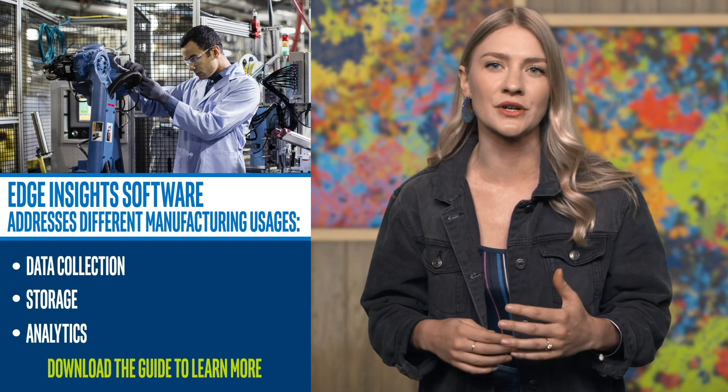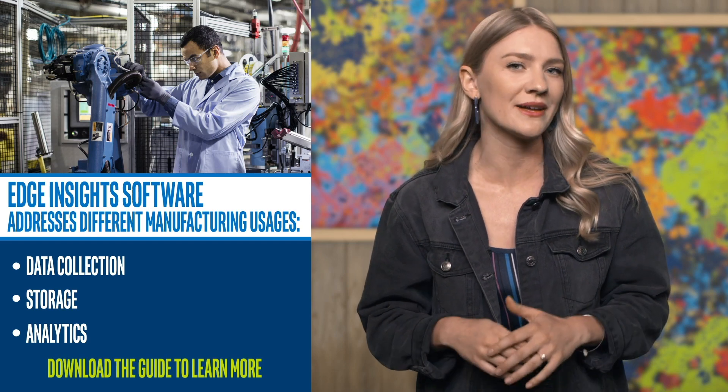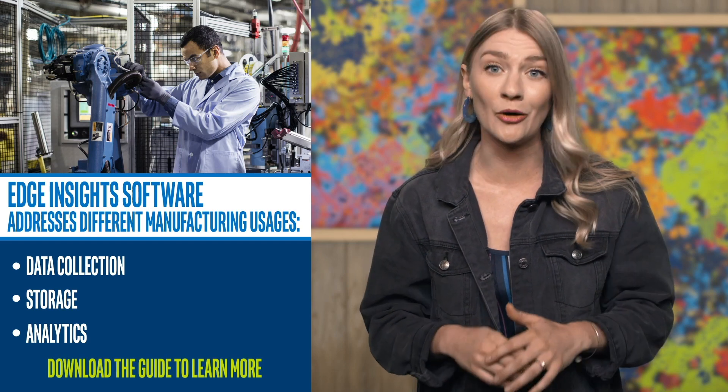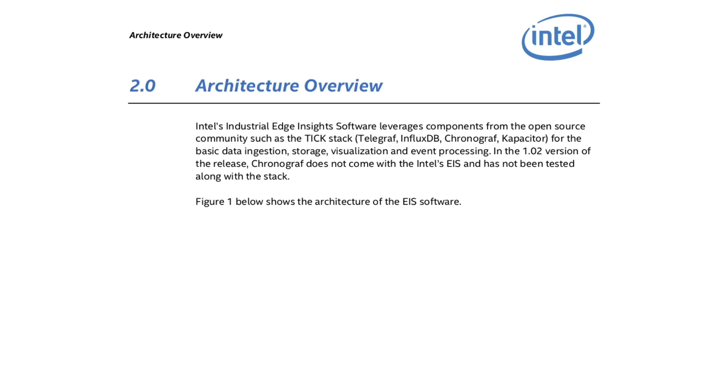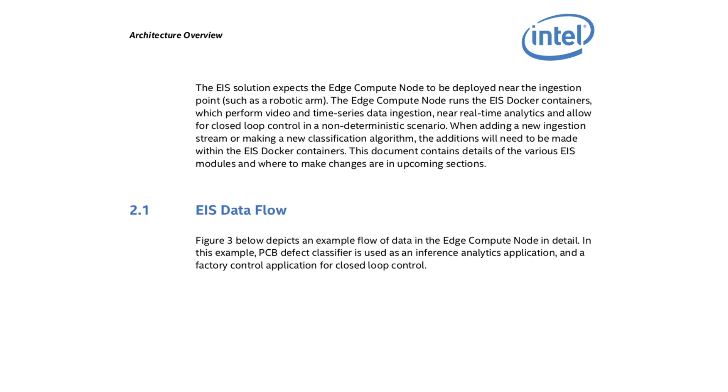The EIS user guide, available in the links, will help you learn more. You can download it to understand the capabilities of EIS ingredients. It's designed to enable system integrators and ISVs to develop custom solutions for different factories. There's a section on terminology, an architecture overview, an EIS data flow, and more.